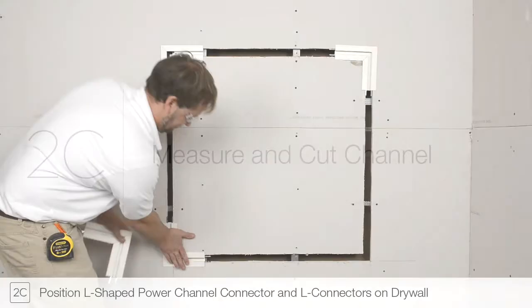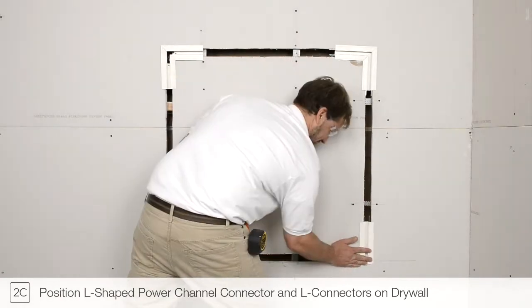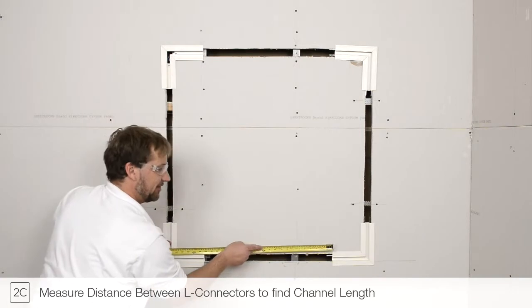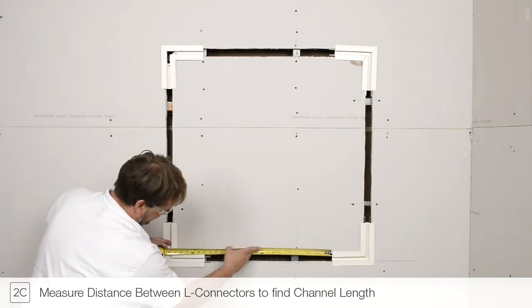Step 2C. Position the L-shaped connectors into the drywall cutout. Measure the distance between the installed L-shaped connectors to find the length of the TrueLine channel to cut.